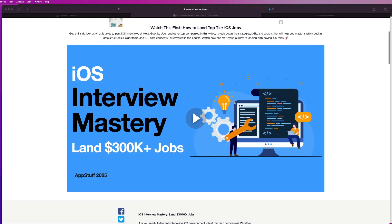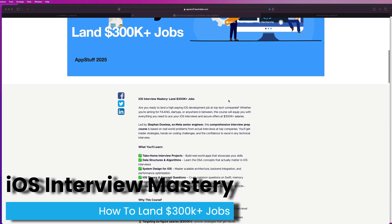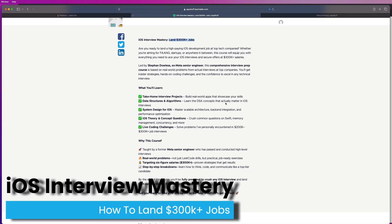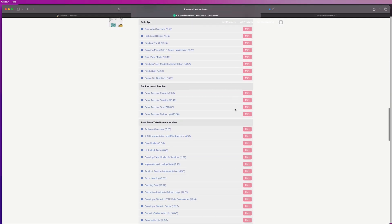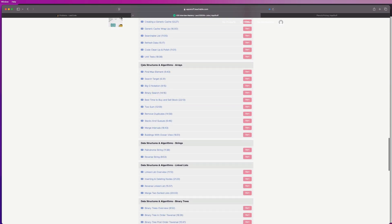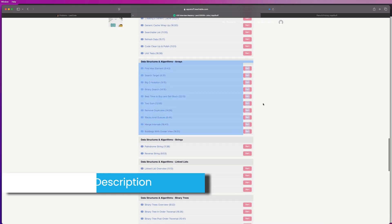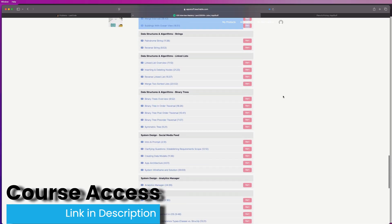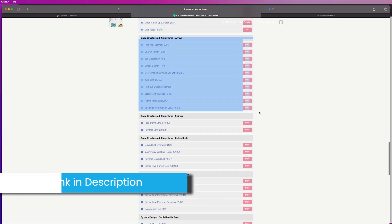Stefan here from AppStuff. And this video today is a lesson straight from my new iOS interview mastery course, where I teach you everything you need to know to land jobs that make over $300,000 a year at companies like Google, Meta, and Uber. This is a video on big O notation, and if we check out the course curriculum here, it is taken from our data structure and algorithm section. So the link for this course is in the description, guys. You can check out the full course curriculum here. I will be posting a couple videos directly from the course to the YouTube channel to give you guys a free preview of it.